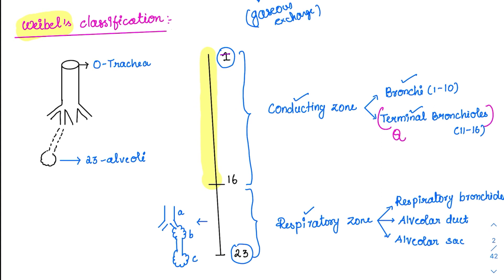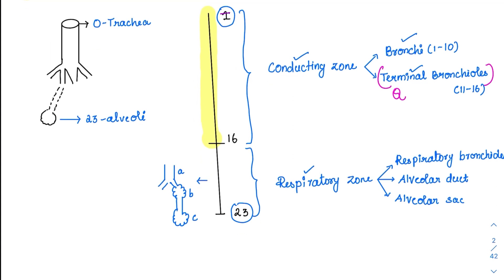From the 16th generation it goes up to the 23rd generation, where gaseous exchange is taking place. So it is called the alveolar airway zone or respiratory zone, and it includes the respiratory bronchioles, alveolar duct, and alveolar sac. Where does respiration begin? Most people think the answer is alveolar sac, but it is not. Respiration begins even at the level of respiratory bronchioles.